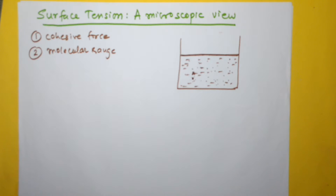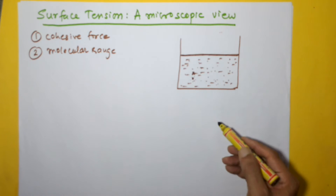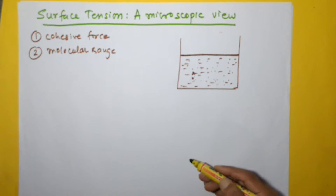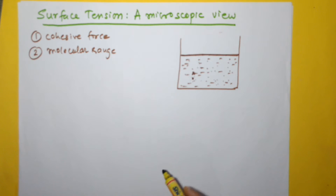Here we'll look at surface tension and have a close look at the microscopic view, meaning we'll try to find out what is happening inside the liquid, what is happening to the molecules of the liquid. To begin with that, let's first try to understand the concept of cohesive forces.